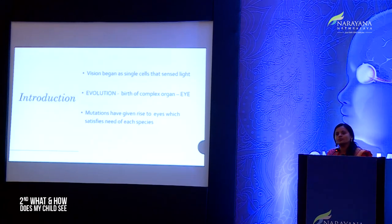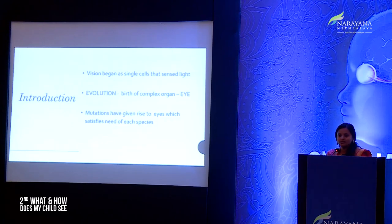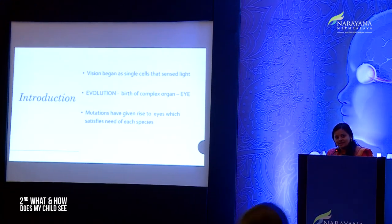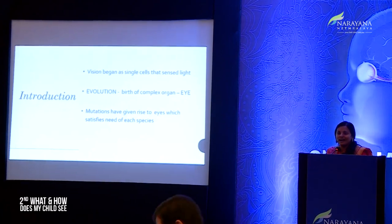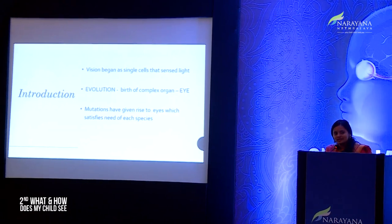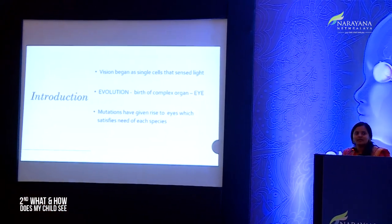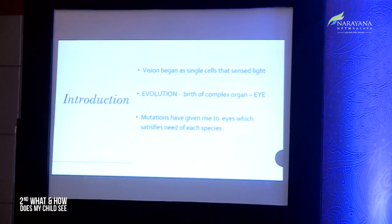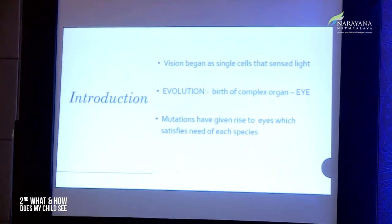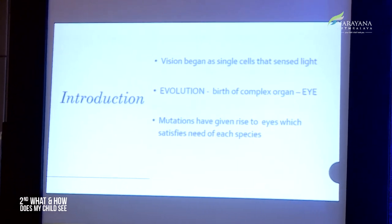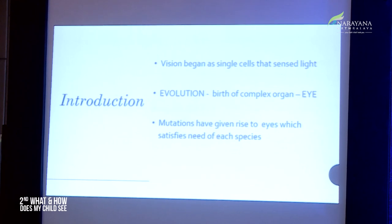If you look at evolution, how did vision begin? Initially, vision began as single cells which could perceive only the presence or absence of light. But as evolution took place, a unique sensory organ called the eye came into existence. Various mutations occurred as evolution happened, and each species gained certain advantages because of the kind of eyes they possessed.